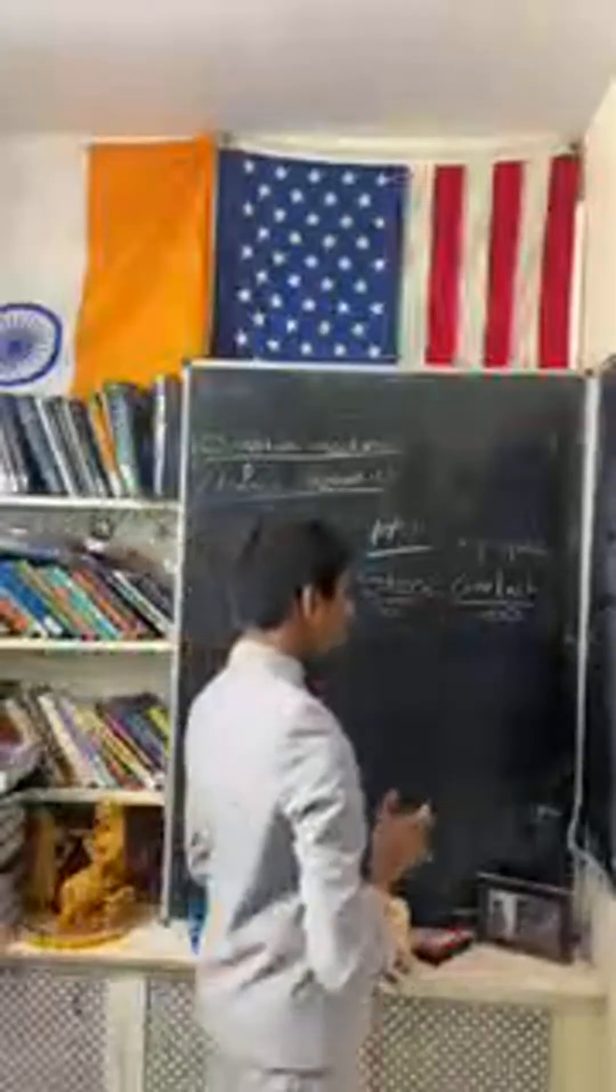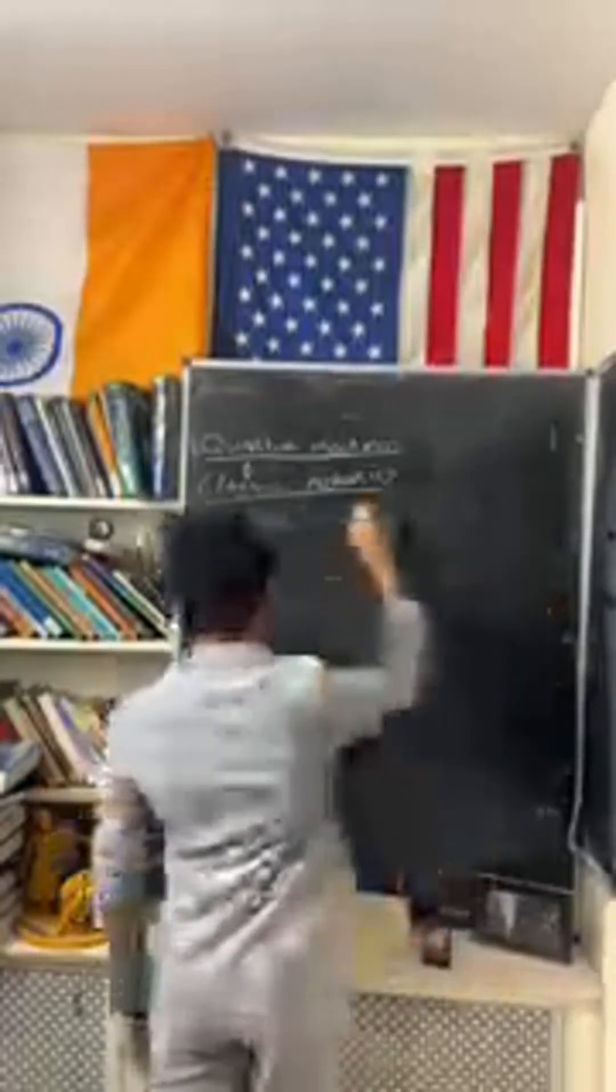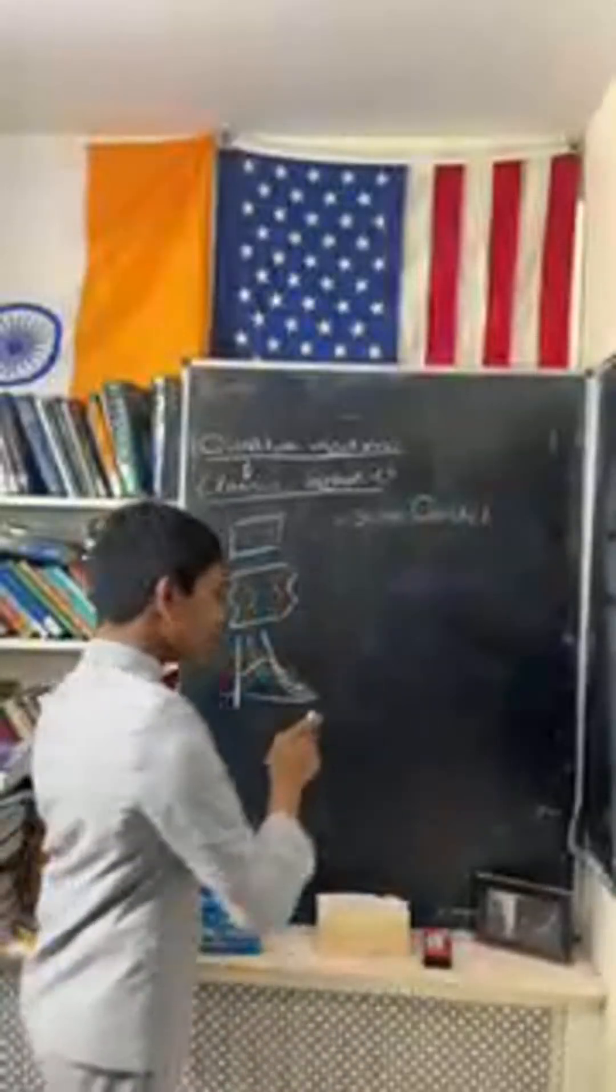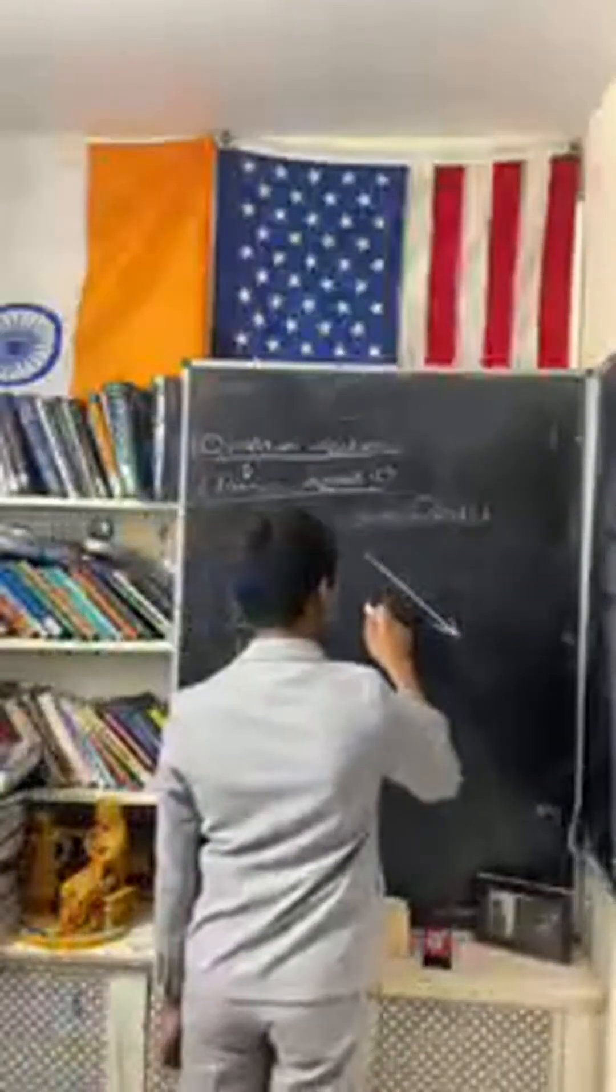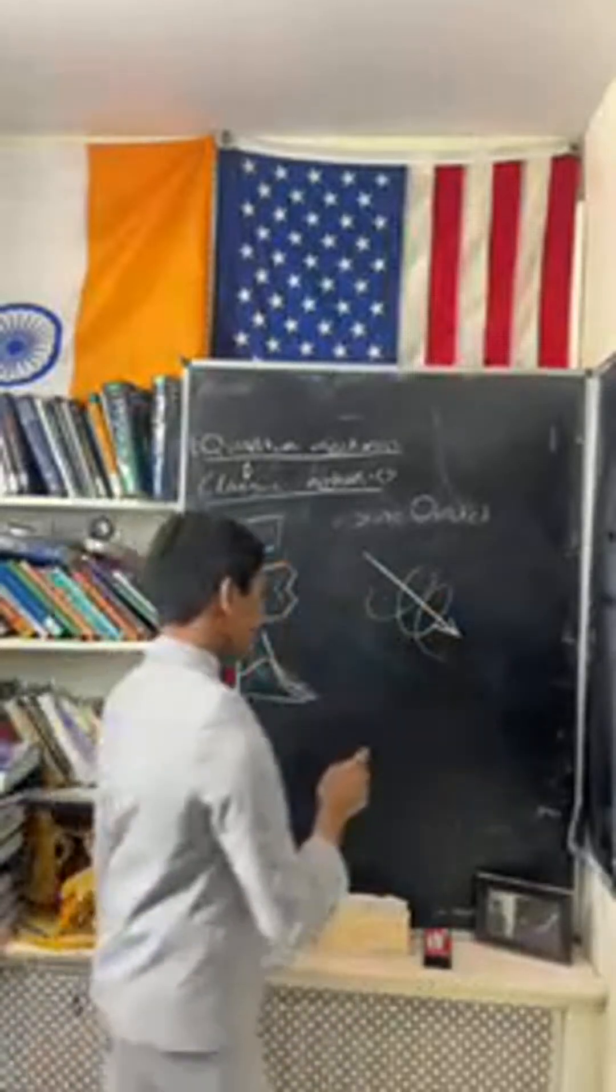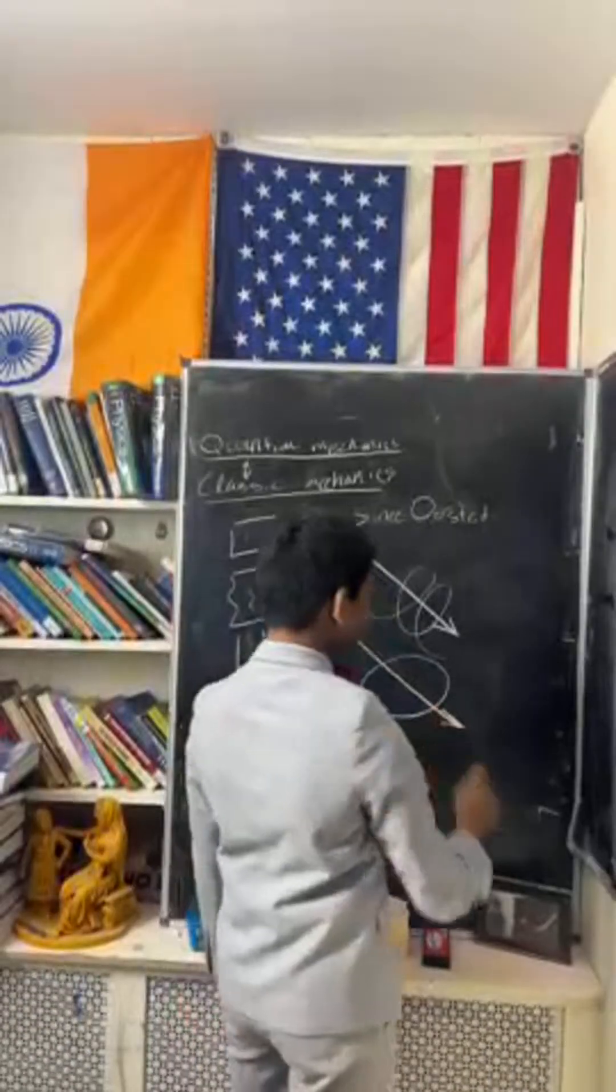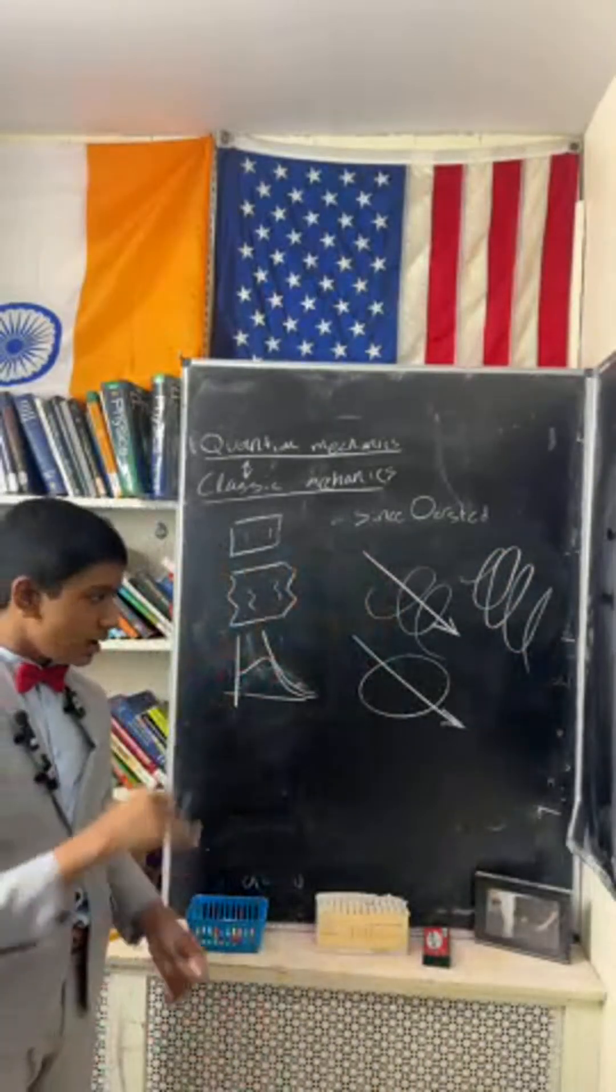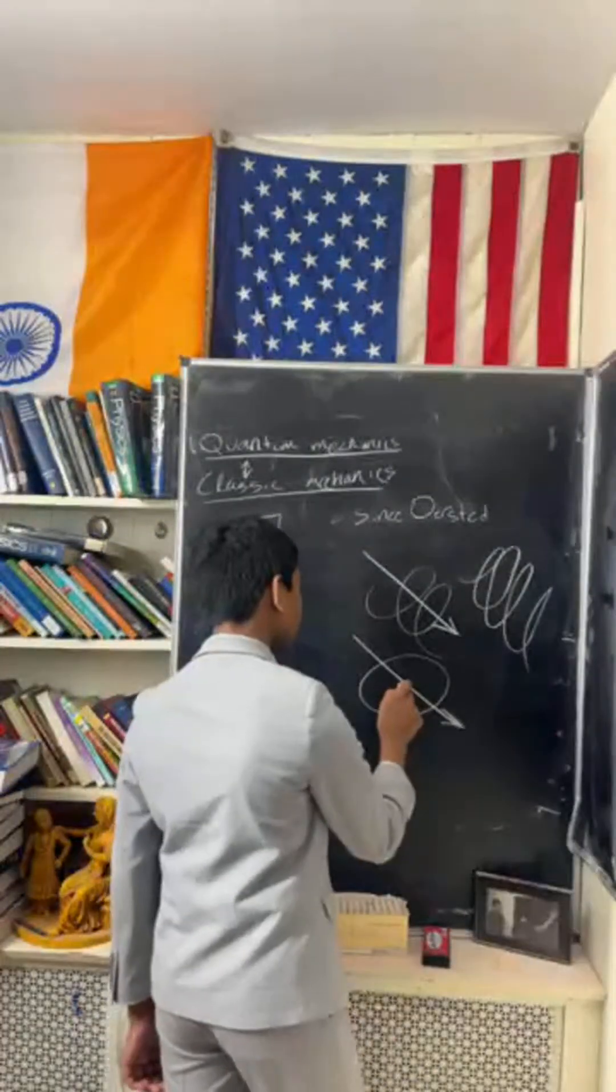So what did the Stern-Gerlach experiment actually provide? Well, here was what the experiment was saying. For a very, very, very long time, since Oersted, people had known that if you take current in a straight line, there's a looping magnetic field around it. And in the same way, if you take current in a loop, there was a magnetic field going straight through it. In fact, of course, this is how the copper coil came to be.